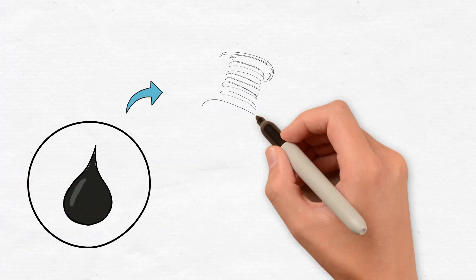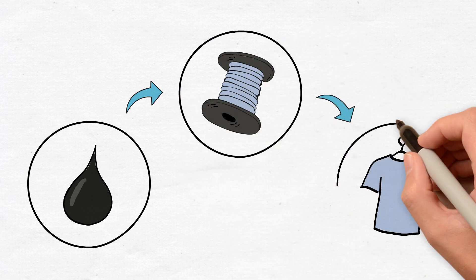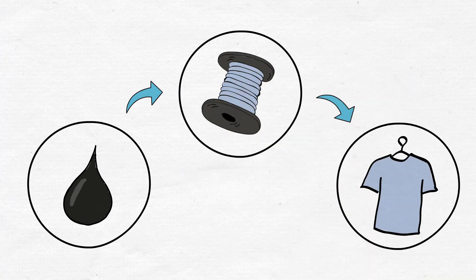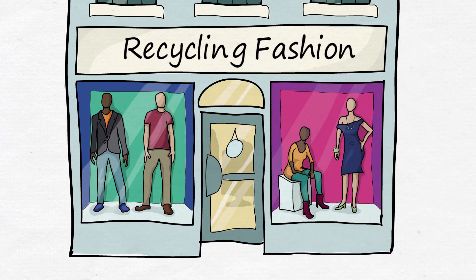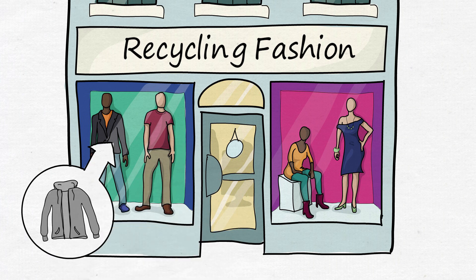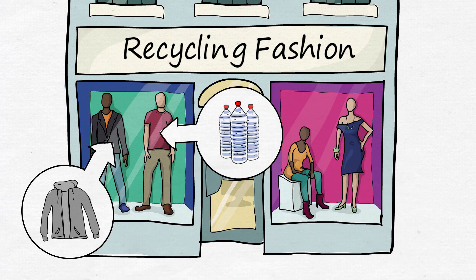Many garments contain fibers made from fossil resources that don't biodegrade. So some fashion designers are betting on recycling. They make garments from discarded polyester clothing or use PET bottles or ocean plastic as a source material.